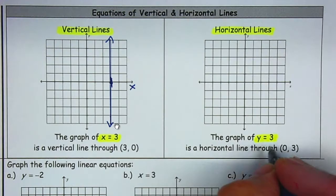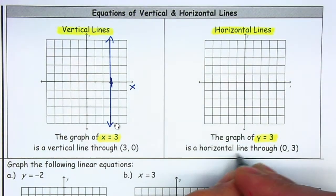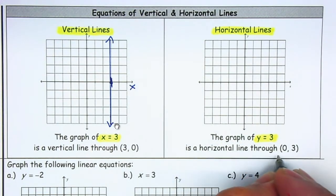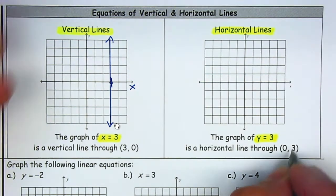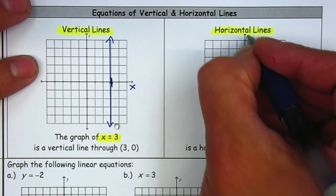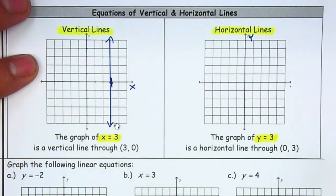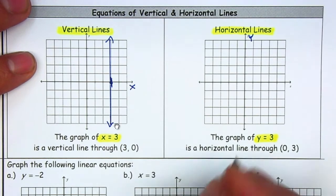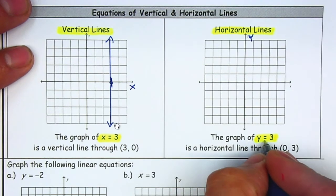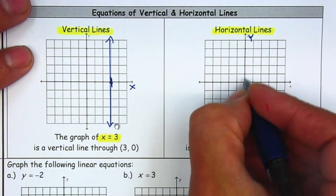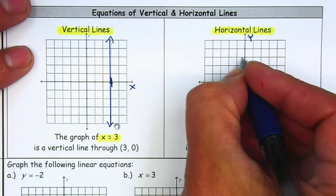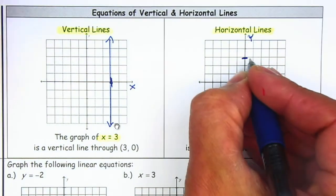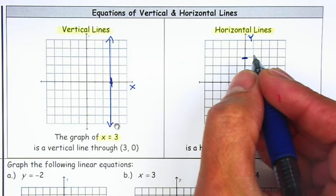If it's y is equal to a number, it's going to be a horizontal line, and it crosses the point (0, 3). So we're going to go to the y-axis, and it has to cross the y-axis at 3 — 1, 2, 3 — and we're just going to expand it.